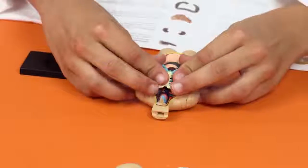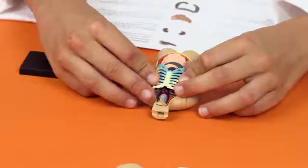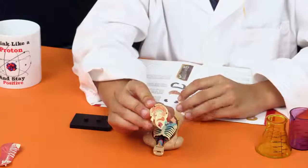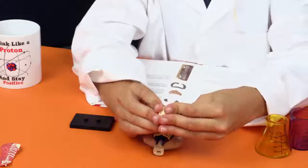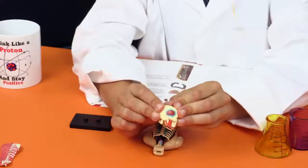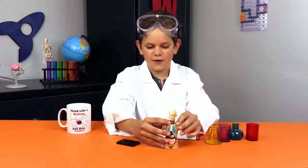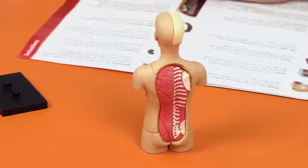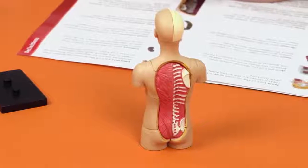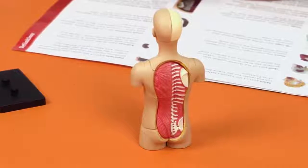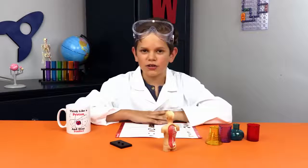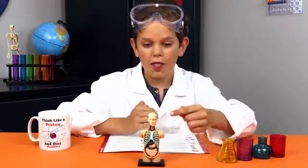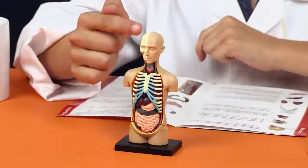In goes the rib cage which protects the heart and the lungs. Now for the brain which controls the body and the skull which protects the brain. And finally the spine. I'll turn my friend around so that you can see. The spine is part of the skeletal system. It contains 33 vertebrae allowing movement of the back and the neck.